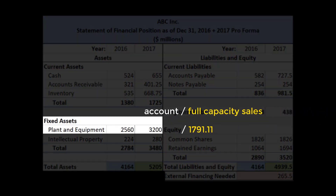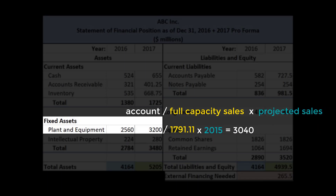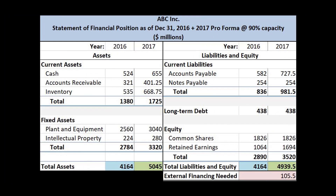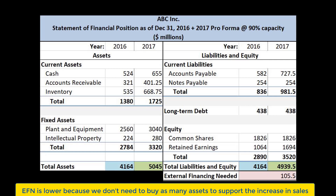Our first step is to divide our fixed assets of 3,200 by full capacity sales, 1,791.11, to get the rate at which fixed assets increase for every dollar in sales beyond full capacity. Our second step is to multiply that rate by the projected sales amount. We should get the pro forma fixed asset amount of 3,040, which is less than the earlier 3,200. This reduces our total assets by 160 to 5,045, but our liability side is still 4,939.5. Subtracting them again, we obtain the new EFN of 105.5. In sum, we have to raise less money externally in order to finance our growth in sales as a result of having some excess capacity.